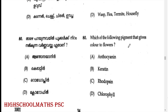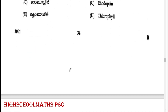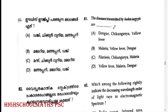Which is the following pigment that gives color to flowers? Answer: Option A. Which disease is transmitted by Aedes mosquito? Answer: Option A — Dengue fever, Chikungunya, and Yellow fever.